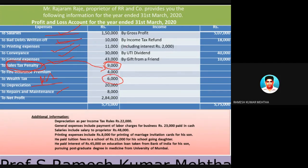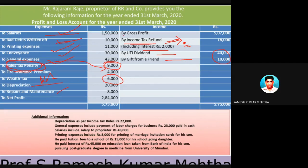Only two items on the debit side are not allowed: sales tax penalty of nine thousand and wealth tax. On the credit side: income tax refund — we need to consider whether this is income or not; UTI dividend is income from other source and should not be placed under profits or gains from business. Regarding income tax refund — he has already paid income tax and is getting a refund — I will give an appropriate answer in the next session.